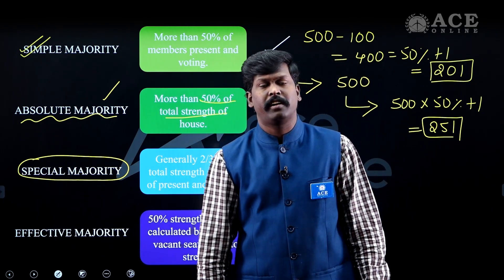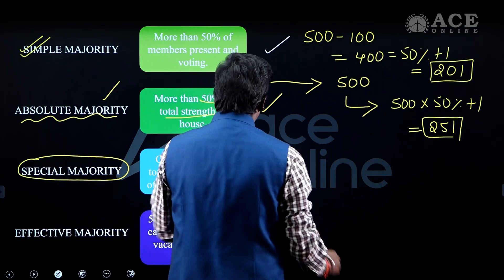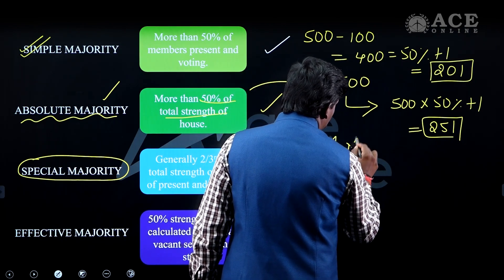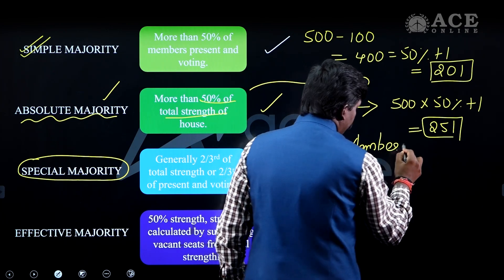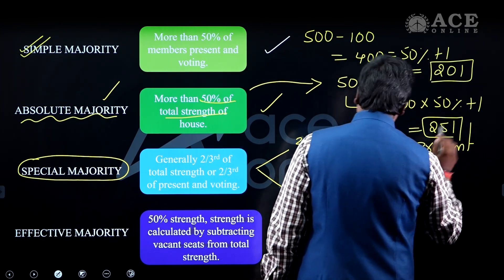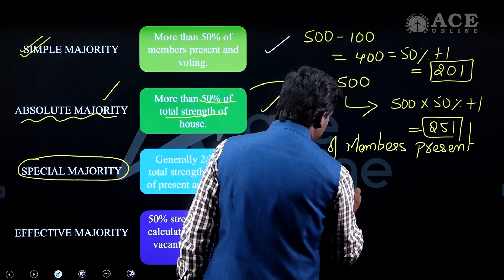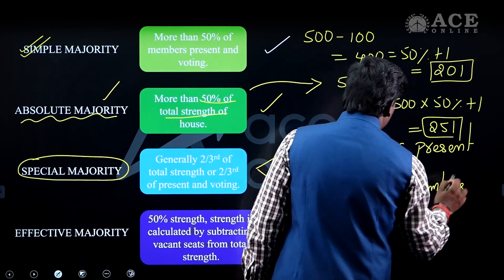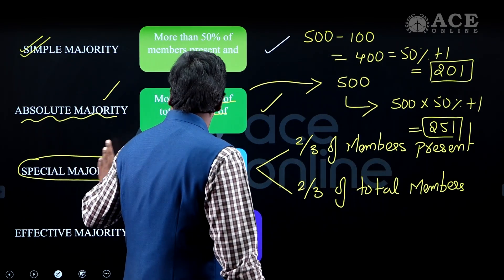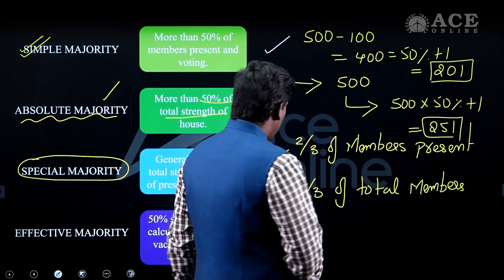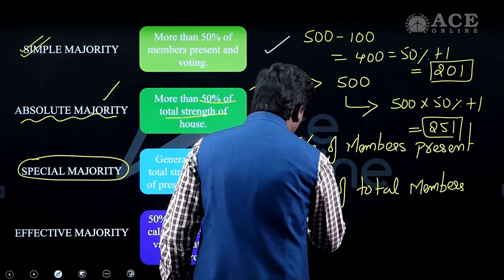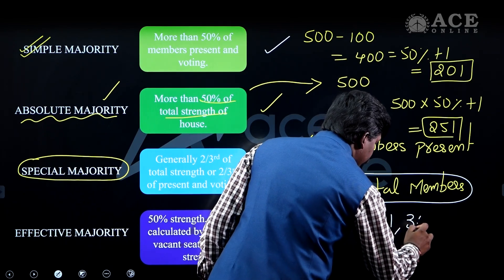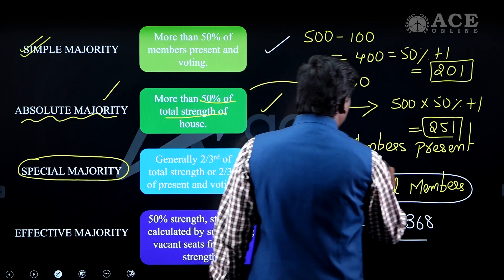The next type is Special Majority. Special majorities are of two types. The first is two-thirds of members present and voted. The second is two-thirds of total members of the house. Article 61 and Article 368 require special majority.